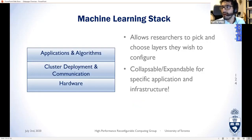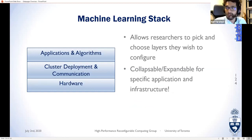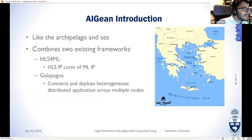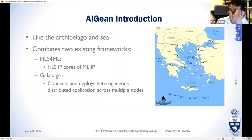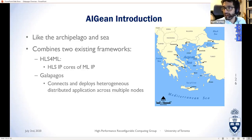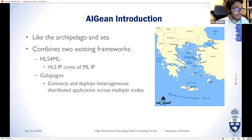Aegean — pronounced like the Aegean Sea — combines two existing frameworks. hls4ml is a project from Fermilab and CERN; it takes a machine learning model (e.g., from TensorFlow) and converts it into Vivado HLS IP cores for the given network layers. Once we have these IP cores, we plug them into Galapagos for deployment and connectivity. Our partitioner is aware of the total FPGAs available — from a database containing resource information for each FPGA — and partitions the IP core library from hls4ml onto multiple nodes.